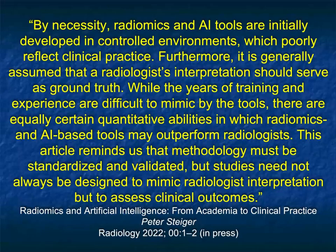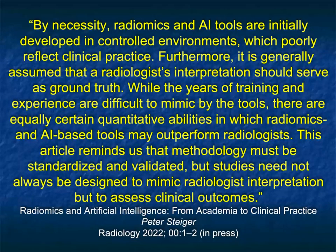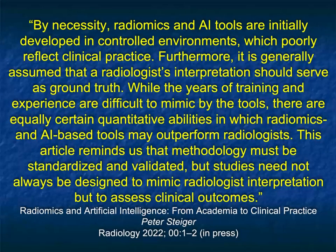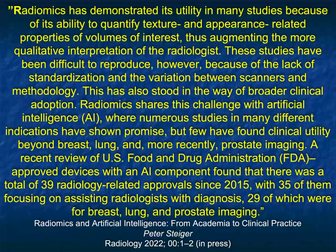It's always going to be a problem with AI: you develop things in your home environment where you have ground truth and know how things are done, but then what happens when you get other datasets? One challenge in training and developing algorithms is you only have your own data. There isn't generically available pancreas tumor data from 10 different scanners or 10 different institutions. That would be ideal — we need to have that available through the ACR or the NIH. We need to be very careful not to come to conclusions that don't hold true in real practice, as this article by Peter Steger makes clear.